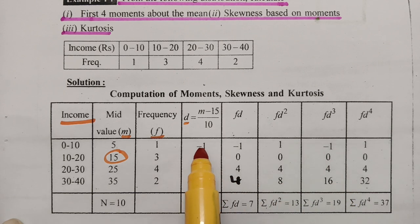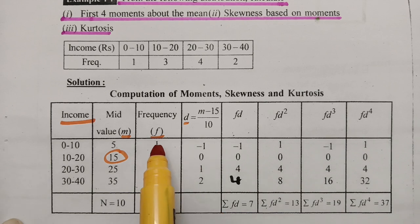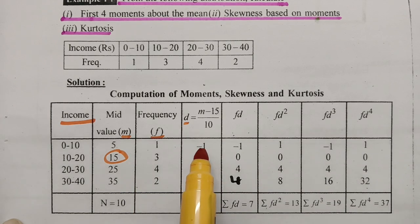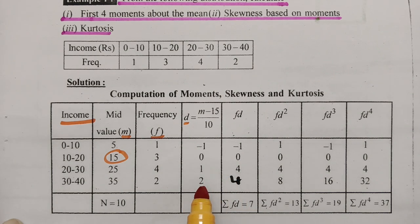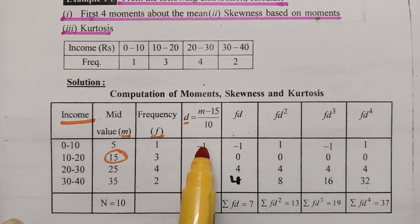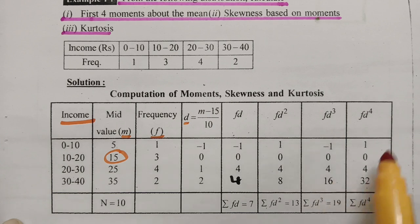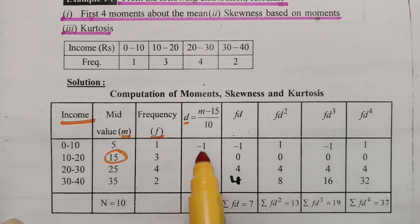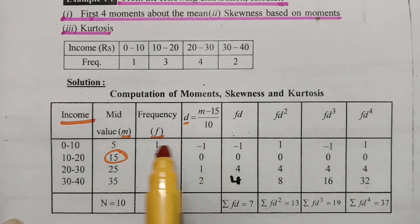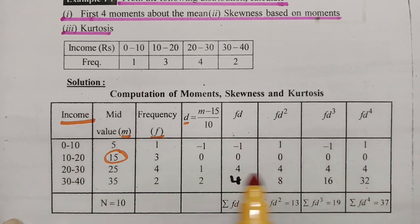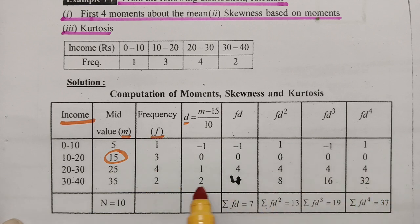For fd³, the d³ values are: (−1)³ = −1, 0³ = 0, 1³ = 1, 2³ = 8. Multiplying by frequency: 1×(−1) = −1, 3×0 = 0, 4×1 = 4, 2×8 = 16. For fd⁴, d⁴ values are: (−1)⁴ = 1, 0⁴ = 0, 1⁴ = 1, 2⁴ = 16. Multiplying by frequency: 1×1 = 1, 3×0 = 0, 4×1 = 4, 2×16 = 32.